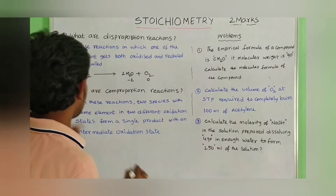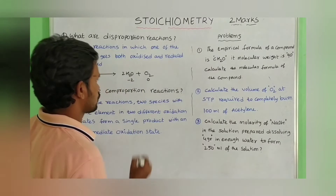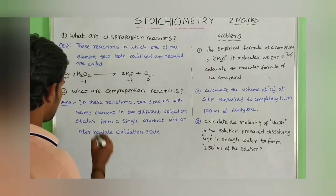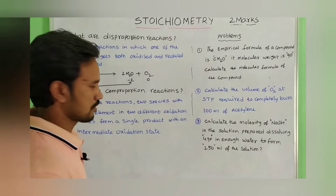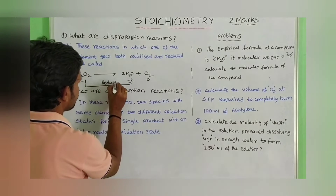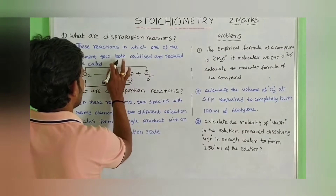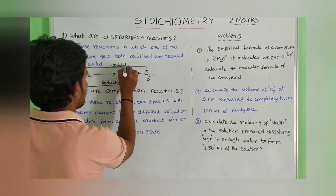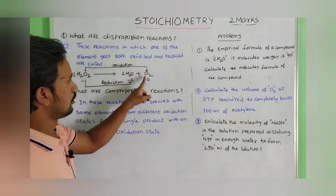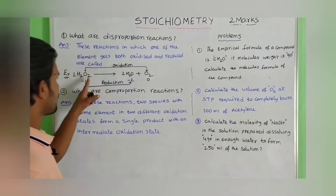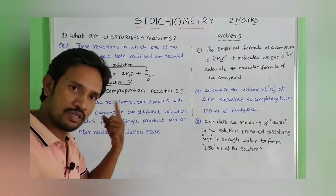Clearly observe it. In H2O2, the oxidation state of oxygen is minus 1; in H2O it is minus 2; and in O2 it is 0. The oxidation state goes from minus 1 to 0 — that means oxidation. And minus 1 to minus 2 is reduction. So the same element gets both oxidized and reduced.